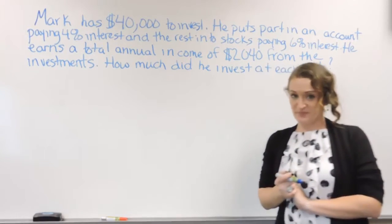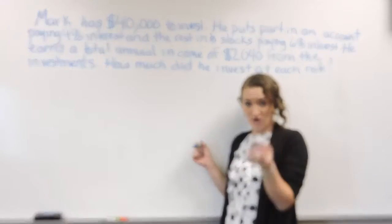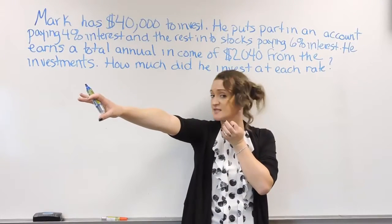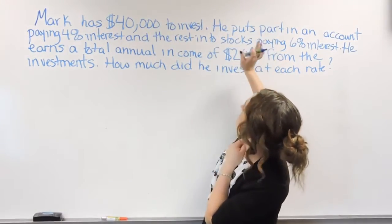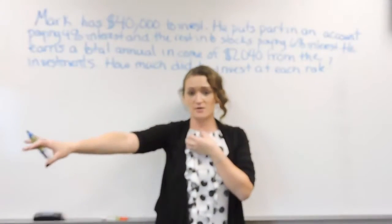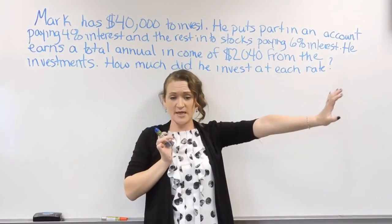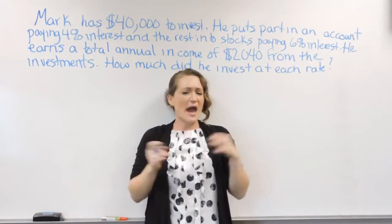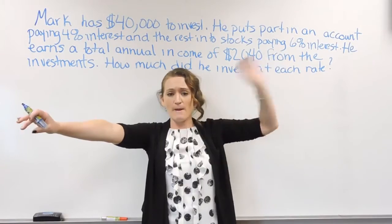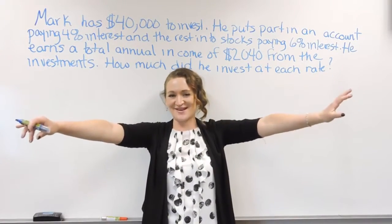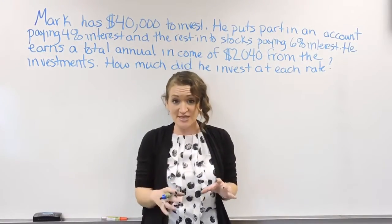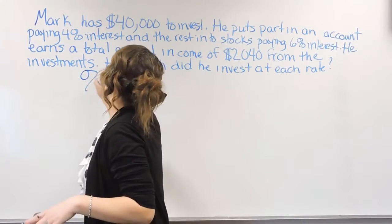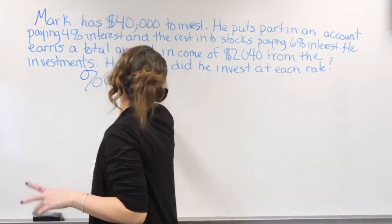We're going to have to piece apart this problem. He has $40,000 to start off with. He's going to take part of that $40,000 and put it away into some account that's going to earn him 4% interest. Then he's going to take the other part of his money and put it into stocks at 6%. So out of $40,000, part of it goes here, part of it goes there — but together, both investments are going to add up to $40,000 initially.